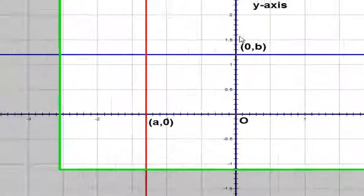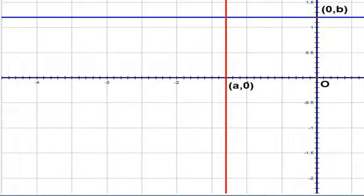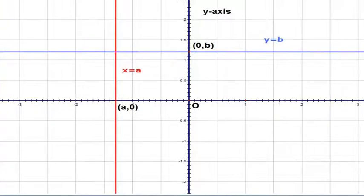In general, if I have a horizontal line passing through (0,b) and a vertical line passing through (a,0), then their equations will be y equals b and x equals a.